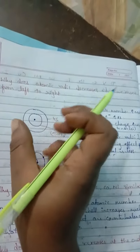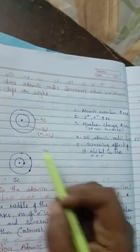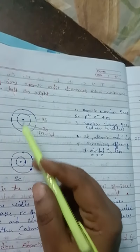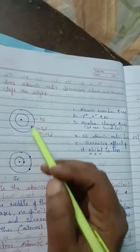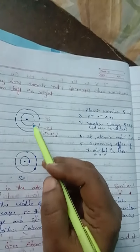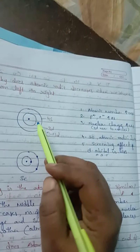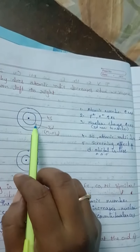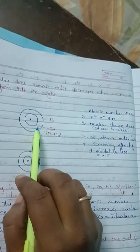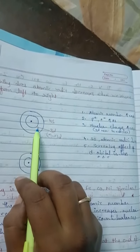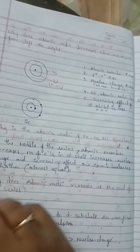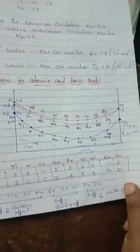The screening effect of the d orbital is less. As we already discussed: for scandium, in the inner shell only one electron is present in 3D1, and in the outer shell two electrons are present.